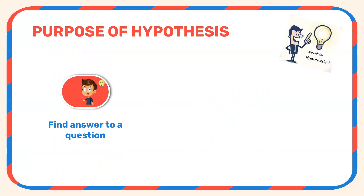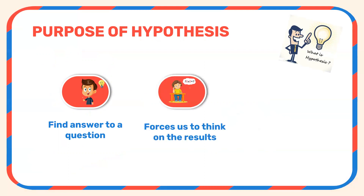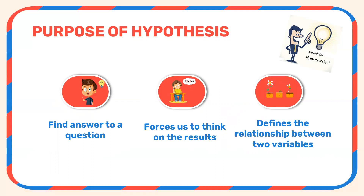Having understood the meaning of hypothesis, let us now move on to the purpose of hypothesis. The first purpose is it helps us to find an answer to a question — when we have a problem in our mind we are able to find an answer through the hypothesis. Second, it helps us to think on the results. It forces us to think about the results and the process of conducting the investigation. Third, it defines the relationship between the two variables.